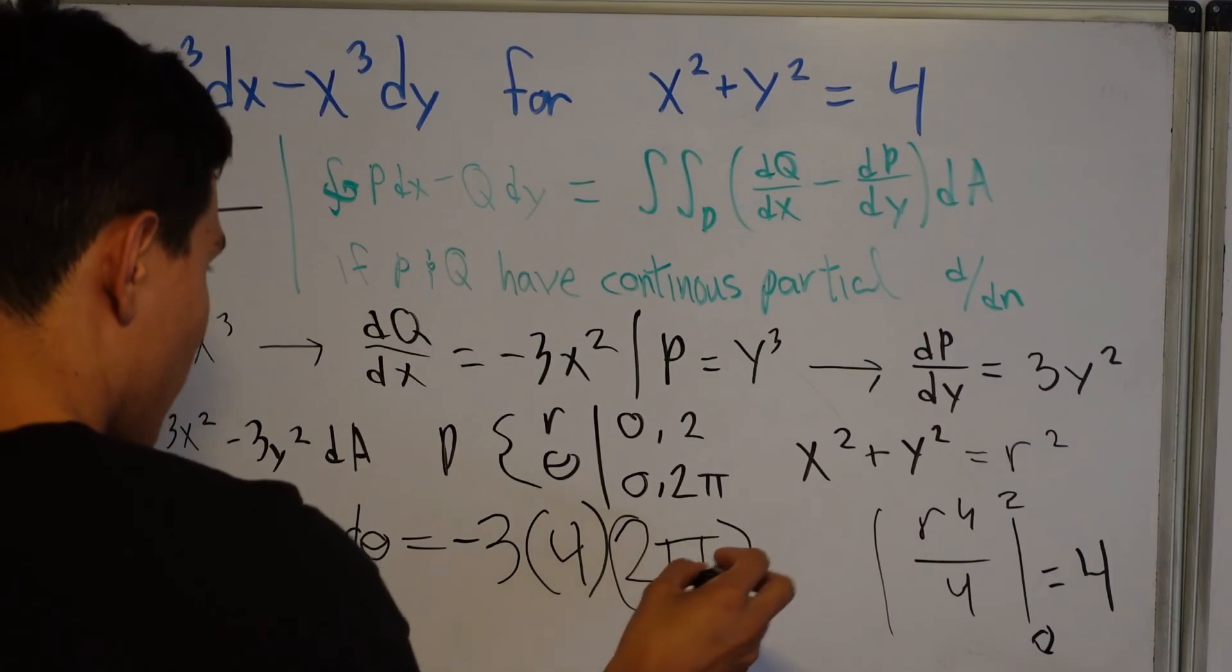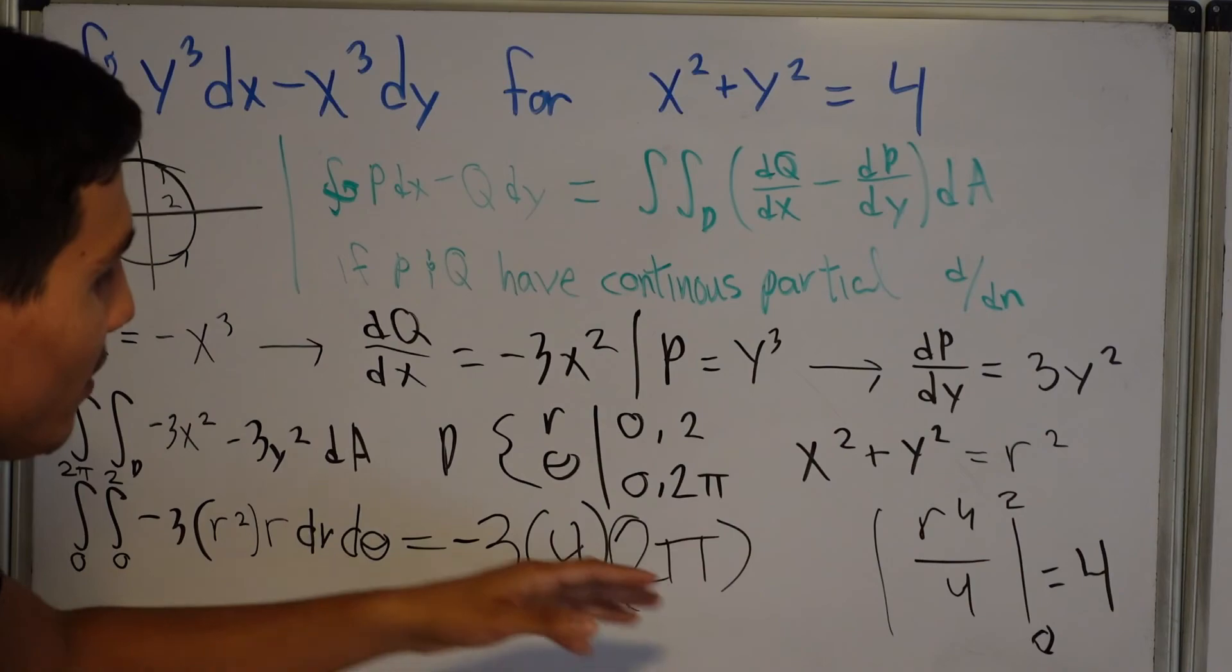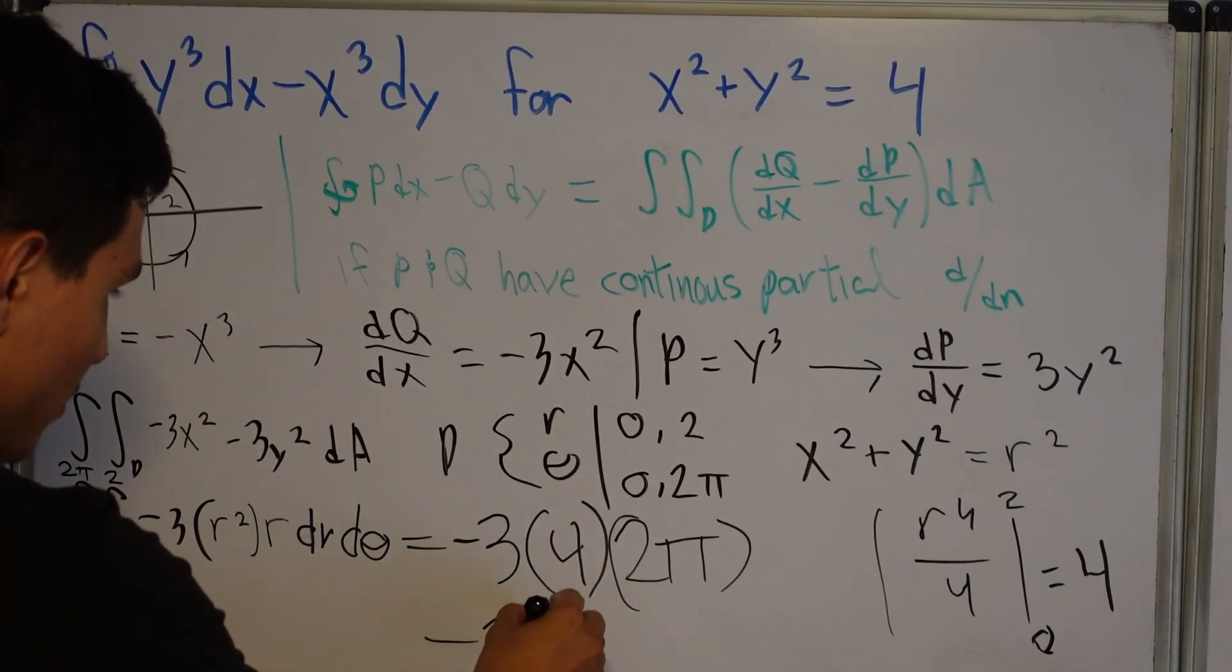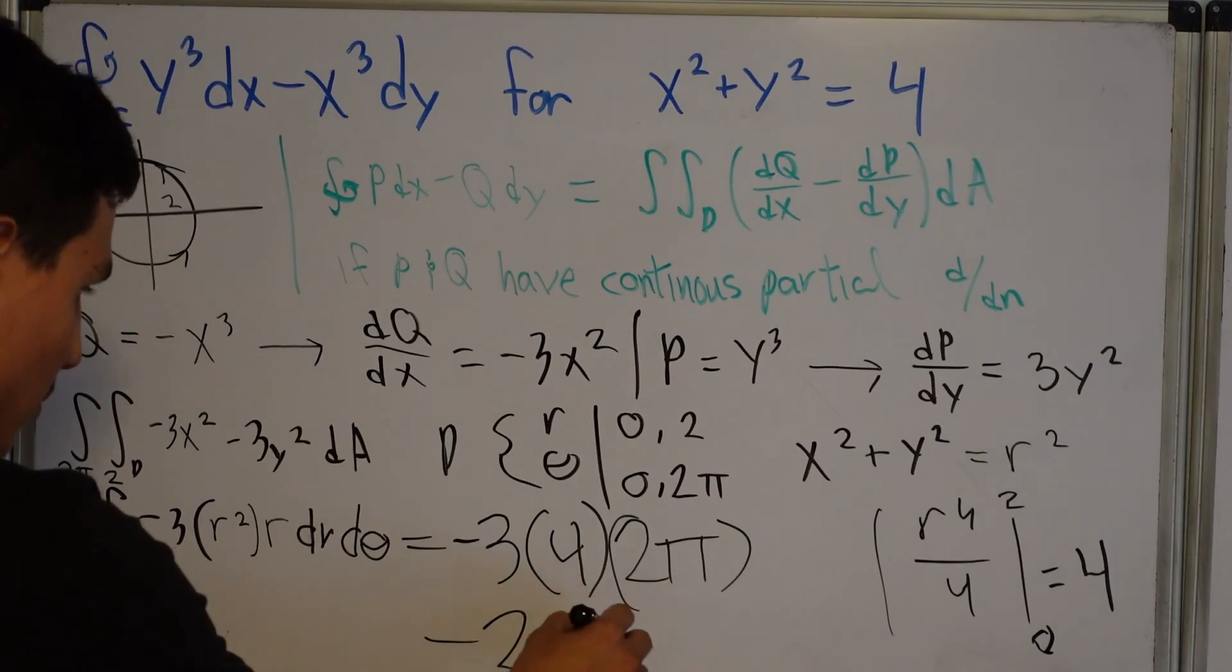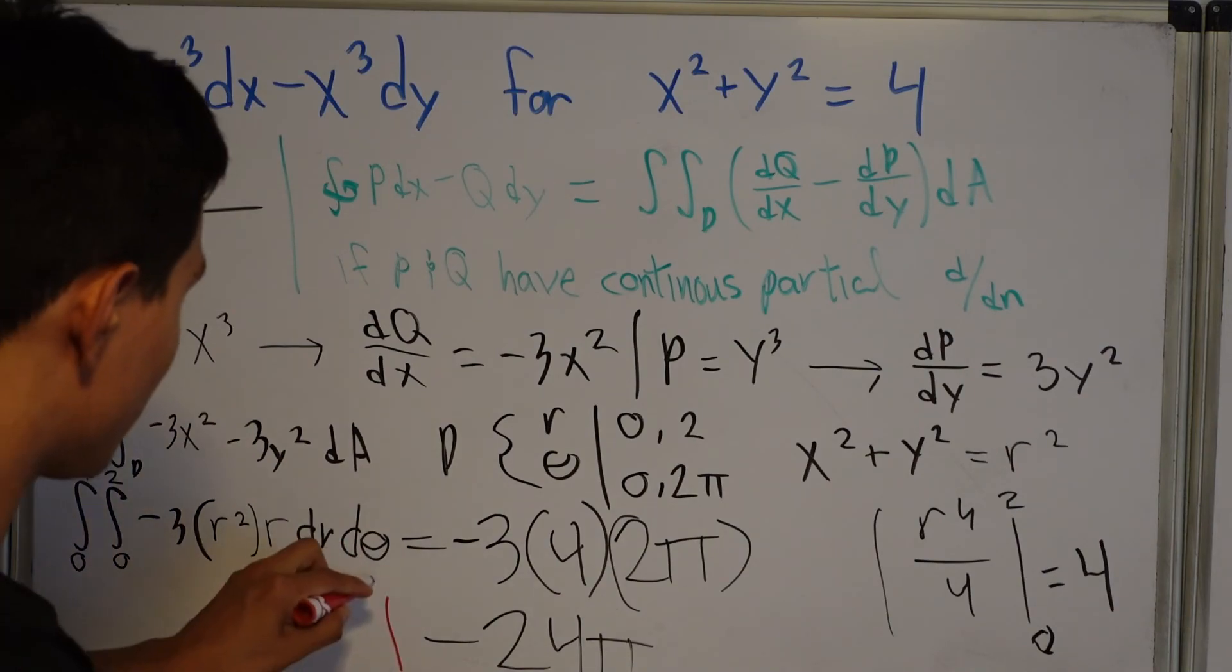Quick warning, the fucking idiot you're watching. So for some reason, he's going to keep saying negative 24 times 2π. It's just negative 24π. Yeah, I don't know why I kept saying negative 24 times 2π when it's just 24π. That's your answer. So please don't get confused.